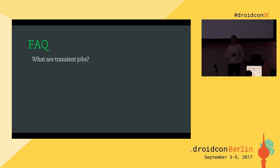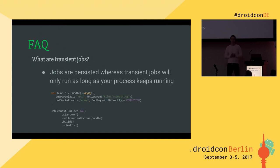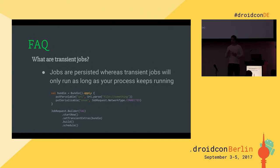What are transient jobs? This is a new feature introduced in Android O that we backported. The idea is that you schedule a job, and if your application is closed or terminates, the job won't run. A good use case is when you want to run a job now and don't care if the application is killed five minutes later. The reason to use the library instead of a normal service is it handles backoff criteria for you — so you can reschedule the job if it fails. The job isn't written to disk like normal jobs.